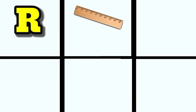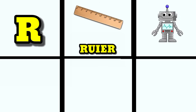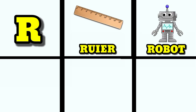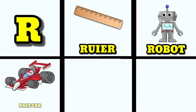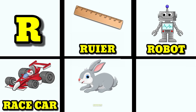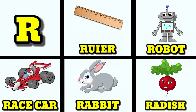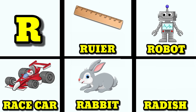R is for ruler. R is for robot. R is for racecar. R is for rabbit. R is for radish.